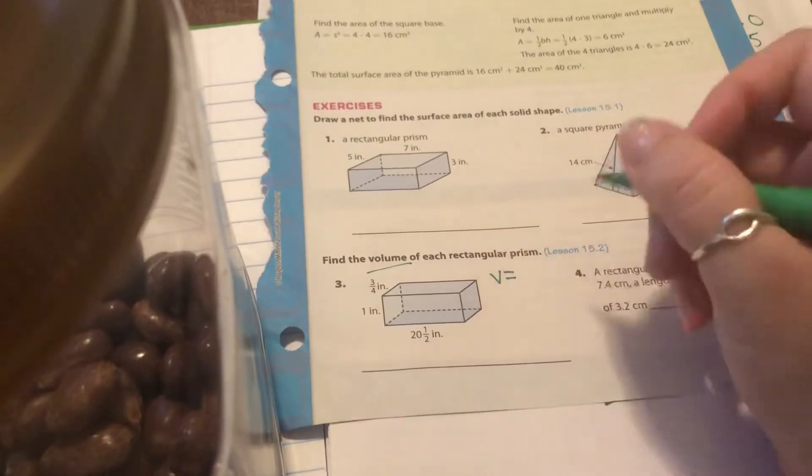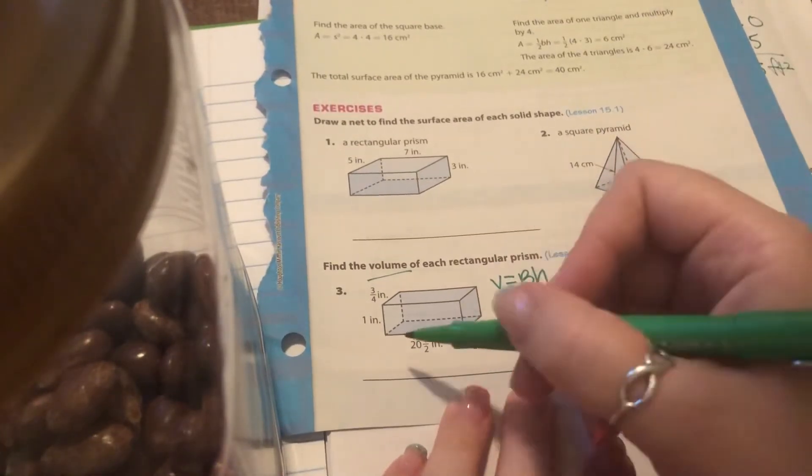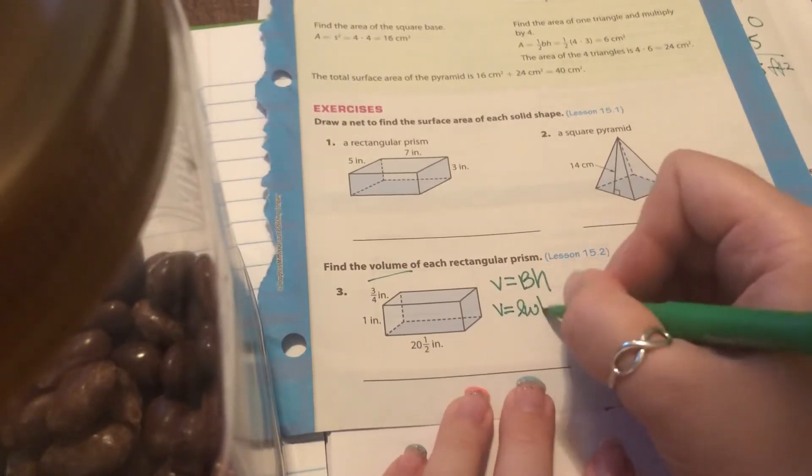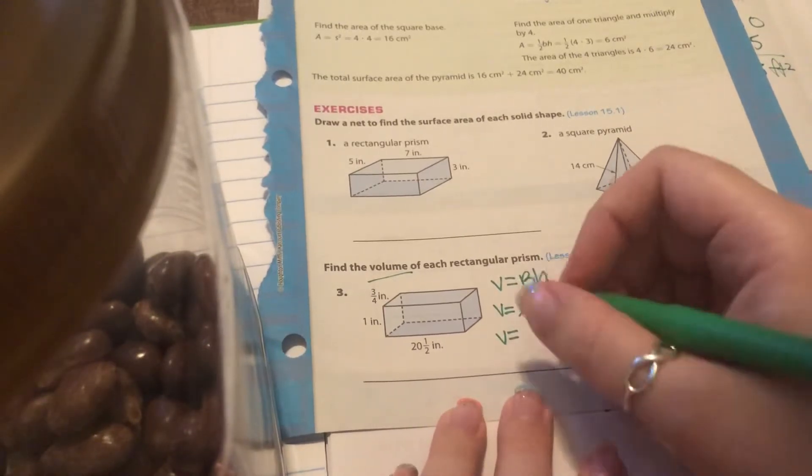We're talking about volume of rectangular prisms. Volume is area of the base times the height. The base shape of a rectangular prism is a rectangle, which has an area of length times width. So our formula is length times width times height. The length is 20 and a half, which is 20.5.